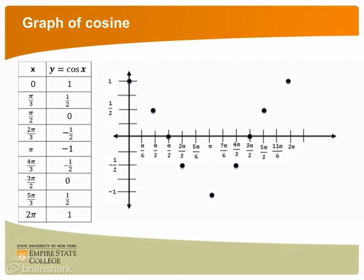We plot the points. We finish by connecting the points. Note the cosine graph starts and ends at the maximum value. Just like sine, this pattern would repeat if we extend the graph past 2π.